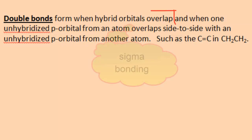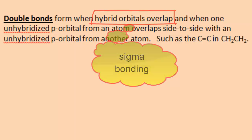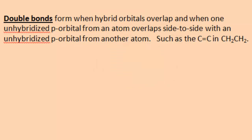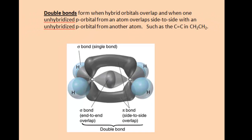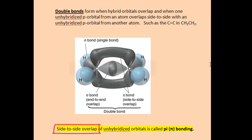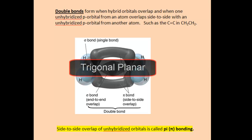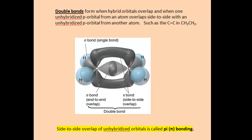Double bonds form when hybrid orbitals overlap and when one unhybridized p orbital from an atom overlaps side to side with an unhybridized p orbital from another atom, such as the carbon-carbon double bond in ethylene. This figure shows the covalent bond formation in ethylene: we see the end-to-end overlap formed by sp2 hybrid orbitals between the carbons, and we also see the side-to-side overlap of p orbitals in each of the carbons. The side-to-side overlap of unhybridized p orbitals is called the pi bond.